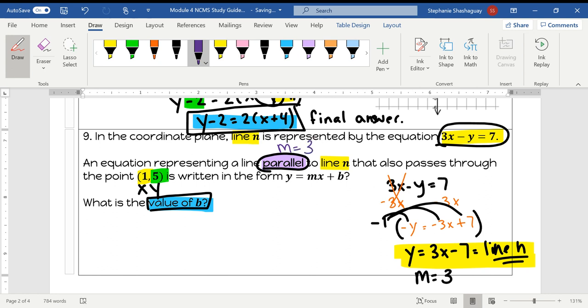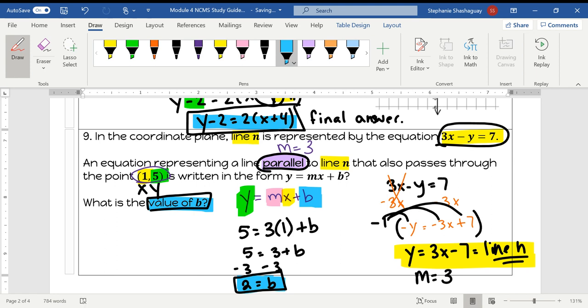Now I have to find the value of B for the line that passes through this point. So I'm going to use my slope-intercept form Y equals MX plus B, and I can plug in the slope, my X, and my Y to then find my B. So 5 is equal to my slope of 3 times my X of 1 plus B. So 5 is equal to 3 plus B. Subtract 3, subtract 3, 2 is equal to B. That is probably one of the hardest questions on the test that you're going to see. If you can figure it out, good job. So B is equal to 2.